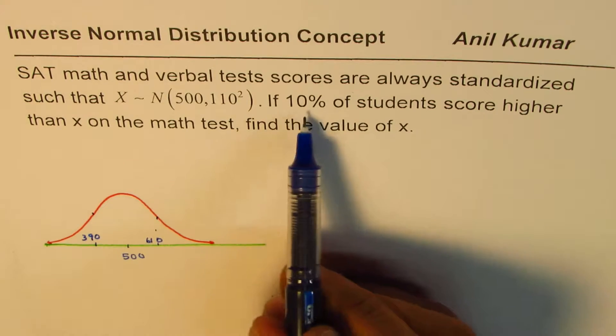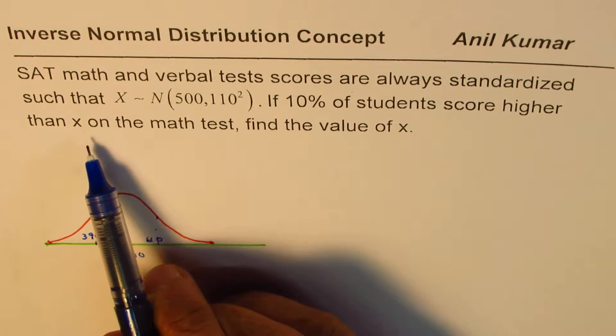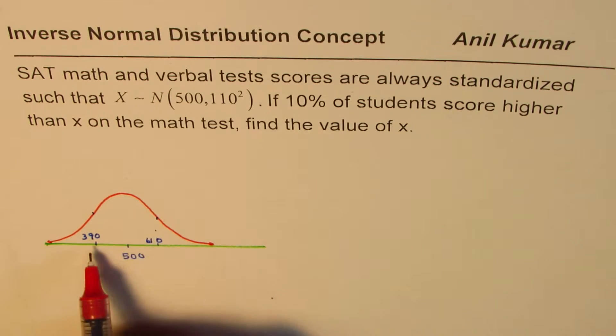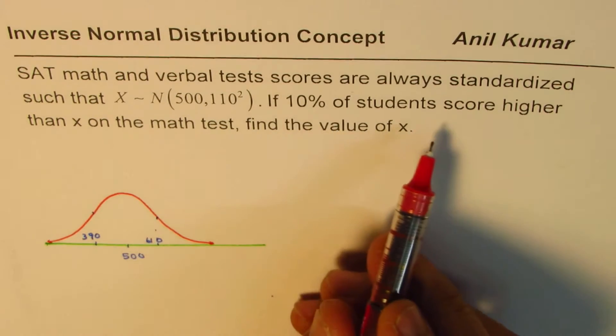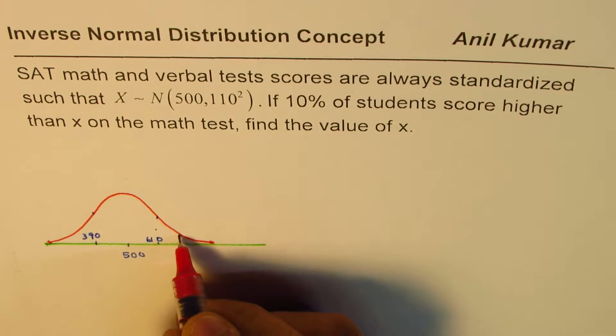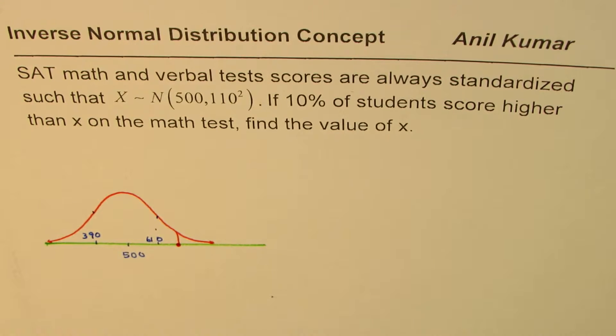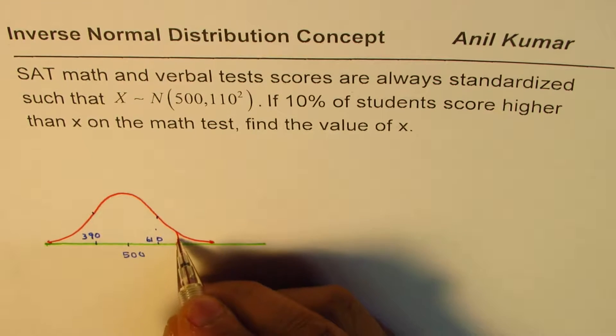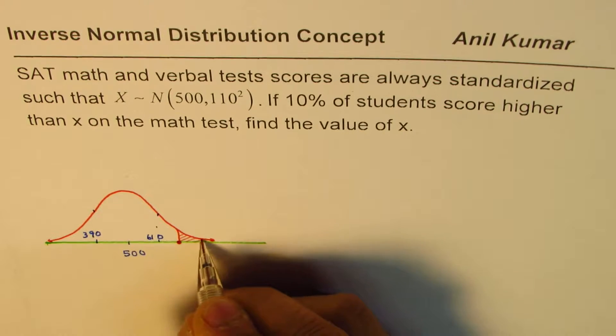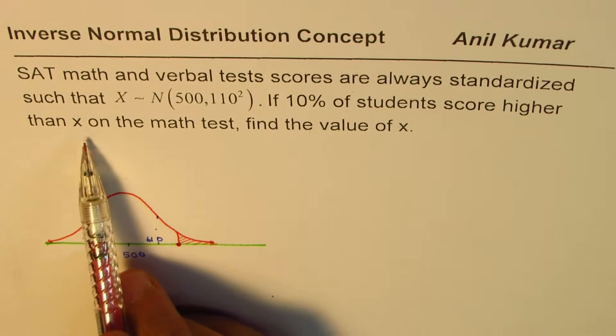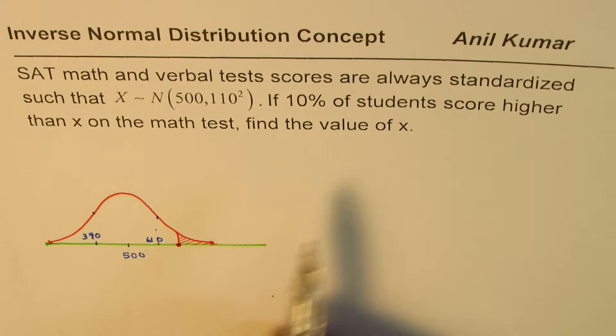Now it says, if 10% of students score higher than x on the math test, find the value of x. So most of the students are in this group. Only 10% score higher. That means we're looking for something on this right side, and we want to find this value. If 10% of students score higher than x on the math test, find the value of x. That is what it is.